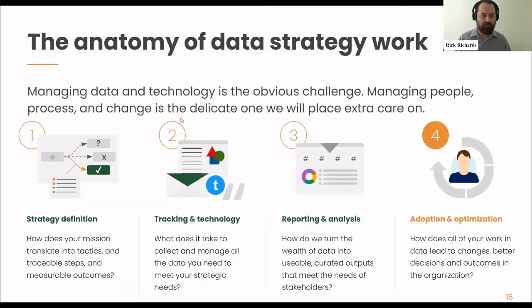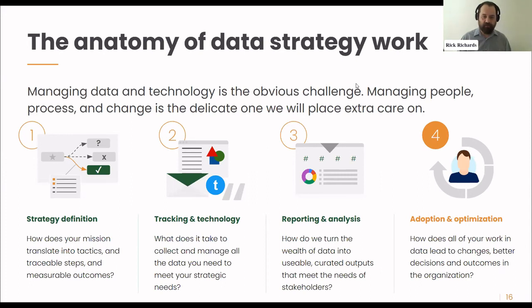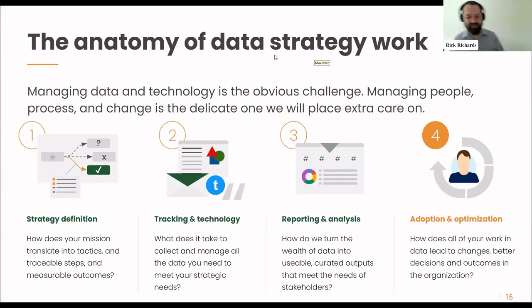When we do data strategy work, we find that most folks get stuck in numbers two and three: tracking and technology — making sure it's set up and running — and reporting and analysis — wanting a nice chart every 30 days in the monthly report. But what gets missed are numbers one and four: strategy definition at the front, and adoption and optimization at the back. If we don't take time to plan what gets tracked and what gets reported, we might not be collecting the right data, we might not be collecting complete data, or we might be reporting on or misrepresenting the wrong data.